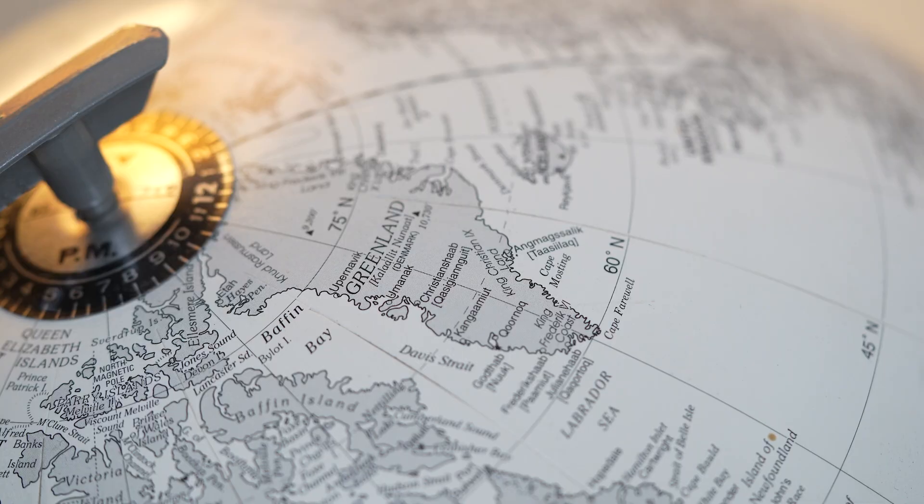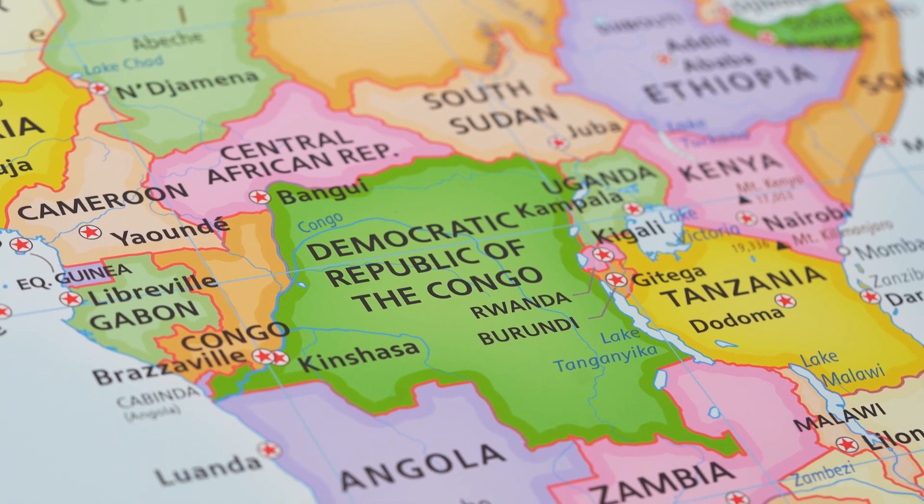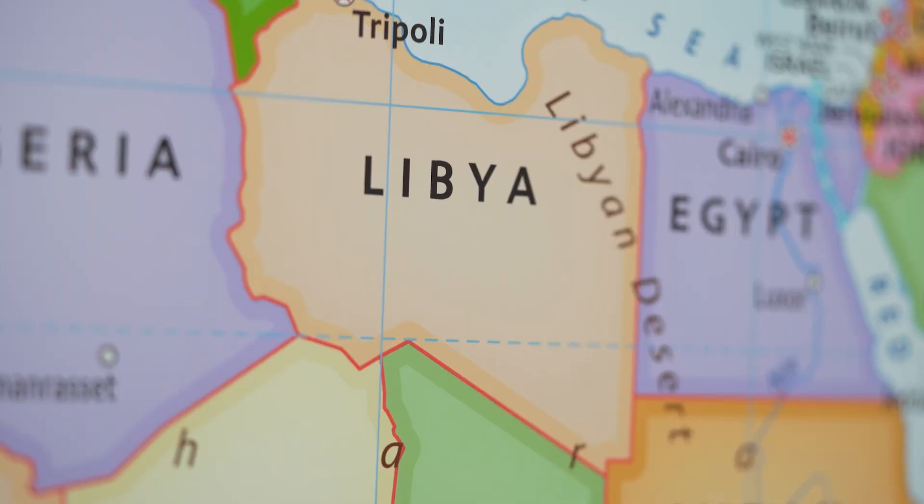Greenland? It's roughly the size of the Democratic Republic of Congo. That's one country inside of Africa. Just one. Alaska, which looks huge on this map, is actually smaller than Libya.